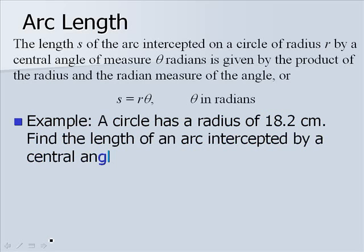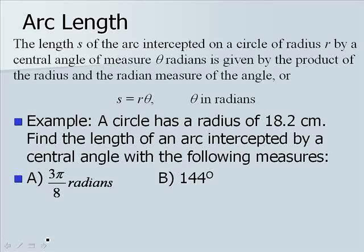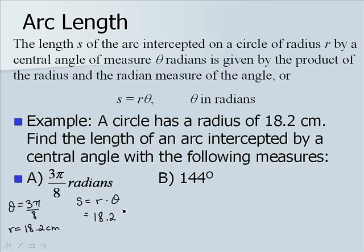If a circle has a radius of 18.2 centimeters, we want to find the length of an arc intercepted by a central angle with the following measures. First, we have theta equal to 3π over 8 radians, and we know that r was 18.2 centimeters. So to find our arc length, we simply plug in to our equation: s is 18.2 centimeters times 3π over 8 radians, and we will get an arc length of approximately 21.4 centimeters.